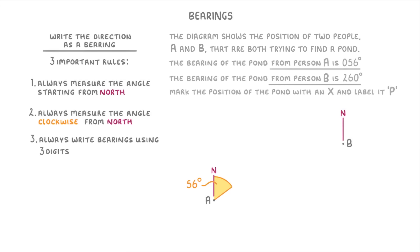And I've done it here as a dashed line, because I don't know where along the line the pond will be. I just know that somewhere along this line there will be a pond. Then we can do exactly the same thing for the bearing of 260 degrees from B, which will give us this line.